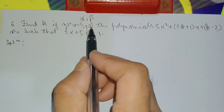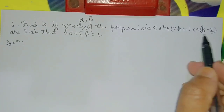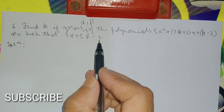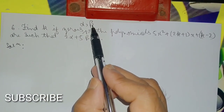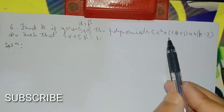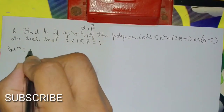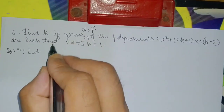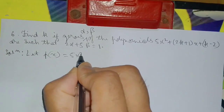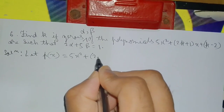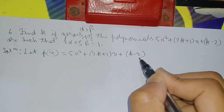Number 6: Find k if alpha and beta are zeros of the polynomial 5x squared plus (2k plus 1)x plus (k minus 2), such that 2 alpha plus 5 beta is equal to 1.